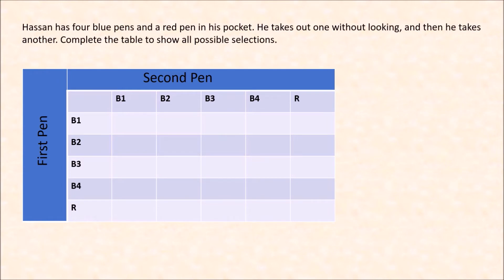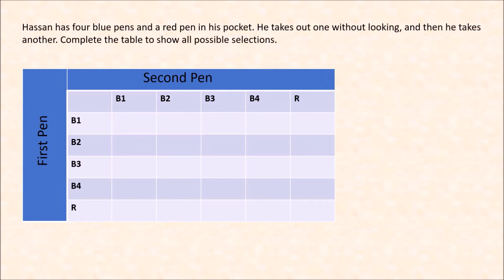Let's take a look at this example where we will use a two-way table. Hassan has four blue pens and a red pen in his pocket. He takes one out without looking and then takes another. Complete the table to show all possible selections. There are two events: he draws one pen and then another. We write the possible outcomes of the first draw on the vertical side — we call the blue pens B1, B2, B3, B4 and the red pen R. For the second draw, we put the same pens on top: B1, B2, B3, B4, and R.